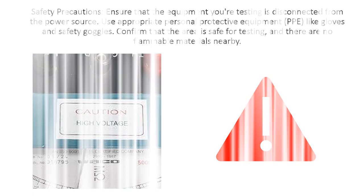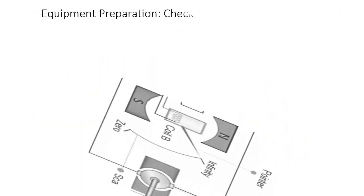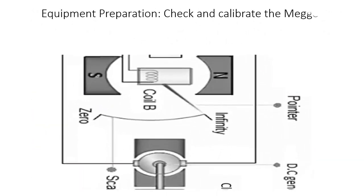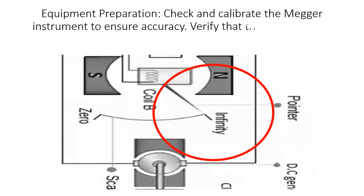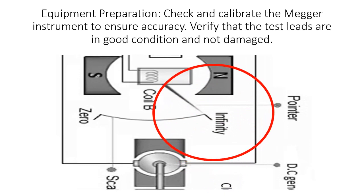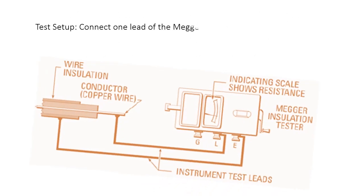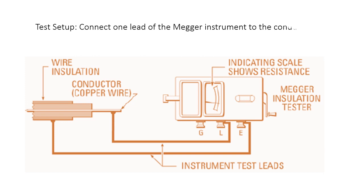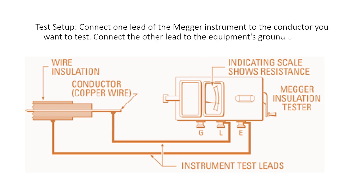Equipment preparation: Check and calibrate the mega instrument to ensure accuracy. Verify that the test leads are in good condition and not damaged. Test Setup: Connect one lead of the mega instrument to the conductor you want to test, and connect the other lead to the equipment's ground or earth.